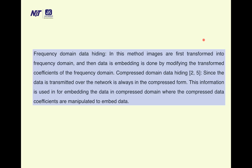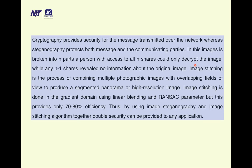In frequency domain data hiding, images are first transformed into the frequency domain, then data is embedded by modifying the transformed coefficients. In compressed domain data hiding, since data transmitted over the network is always in compressed form, this information is used to embed data in the compressed domain, where the compressed data coefficients are manipulated to embed the data. Cryptography provides security for messages transmitted over the network, whereas steganography protects both the message and the communicating parties.